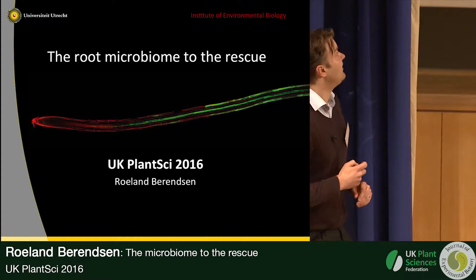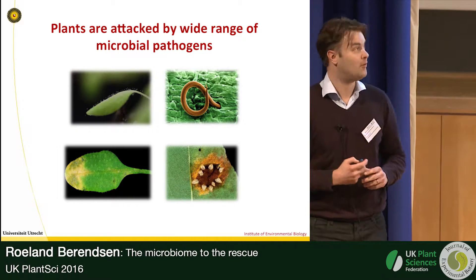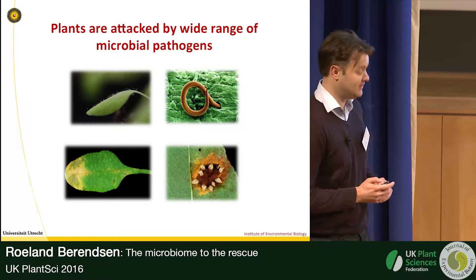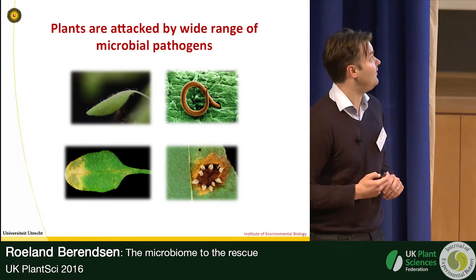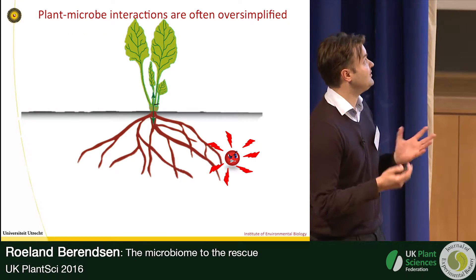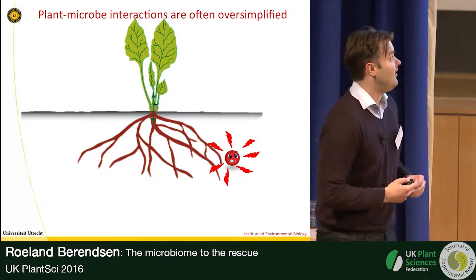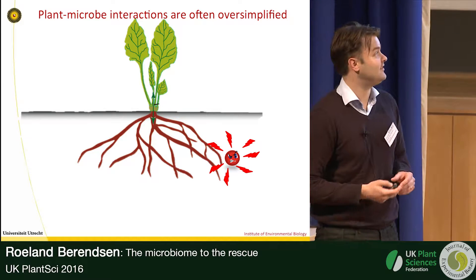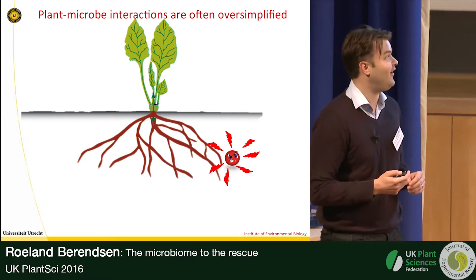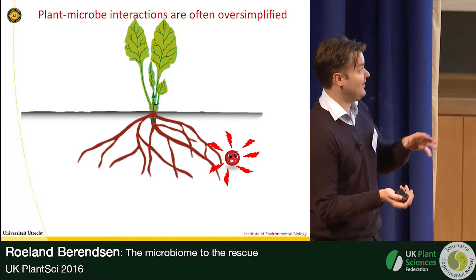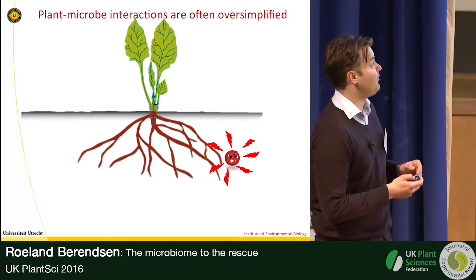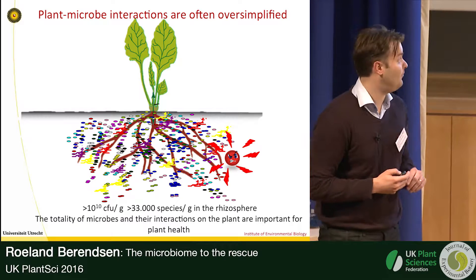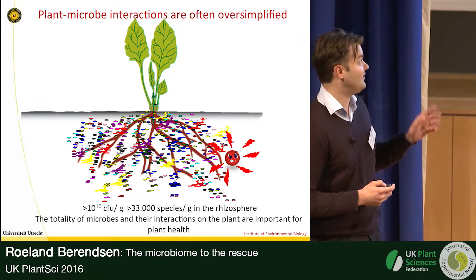As you all probably know, most plants can be attacked by a wide range of microbial pathogens. The interactions between these pathogens and plants are often studied because this is important for agriculture, but when these interactions are studied, they're mostly oversimplified — focusing on the pathogen and the plant. But there are many more microbes present; over 10 to the 10th bacteria per gram of root can be found in the rhizosphere.